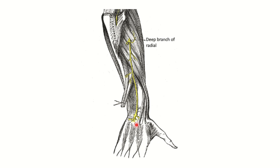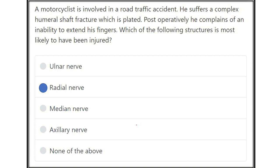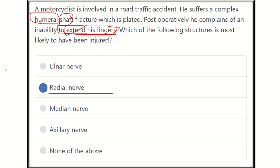Our answer is now ready: the radial nerve. The fracture occurred at the shaft of the humerus, and the patient cannot extend the fingers. We know the extensors of the arm, forearm, and hand are supplied by the radial nerve. Since the fracture is at the mid-shaft, where the radial nerve runs very close to the bone, there is a risk of radial nerve injury during the fracture. Thank you all.